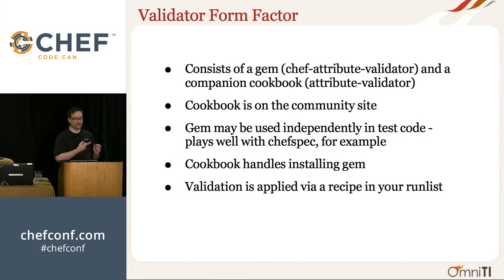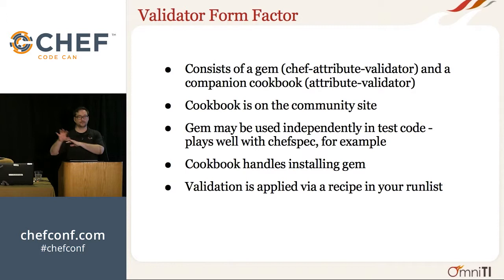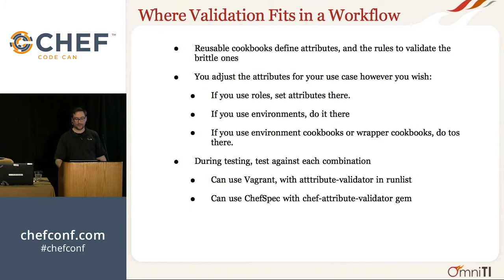Talking a bit more about the validator itself and why it's shaped the way it is. It comes as a two-part thing: a gem and a companion cookbook. I split it up that way so that it would be easy to use the gem in your test flow. It could have been implemented as a library cookbook, but then if you wanted to use it outside of a convergence run you'd have to download the cookbook and extract it. The cookbook is on the community site, the gem is on RubyGems. The cookbook will handle installing the gem if you call either compile time or converge time install, and the validation is applied by a run list.